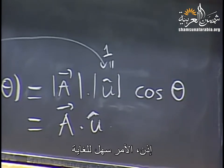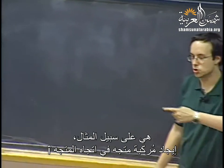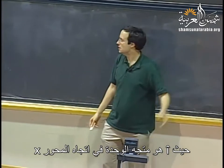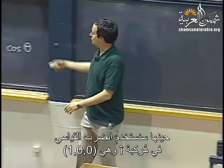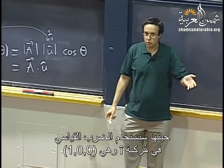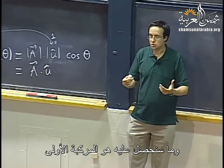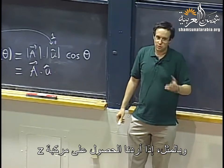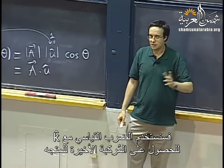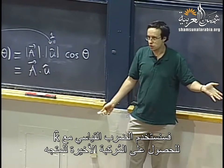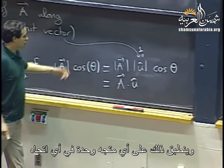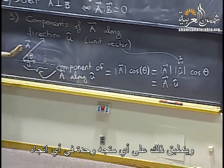The most obvious case is finding the component along i-hat, the first axis — the unit vector along the x-axis. You do the dot product with i-hat, which is (1,0,0), and you get the first component, which is indeed the x-component of the vector. Similarly, if you want the z-component, you do the dot product with k, and that gives you the last component. But the same works with a unit vector in any direction.